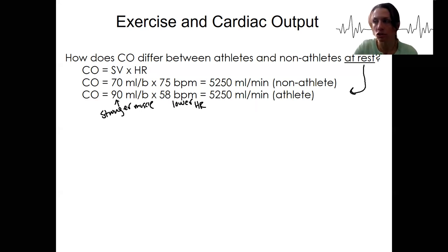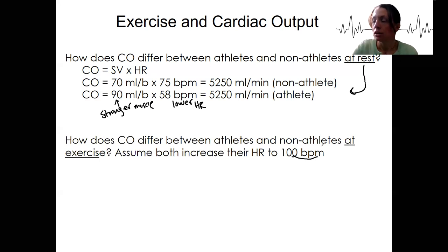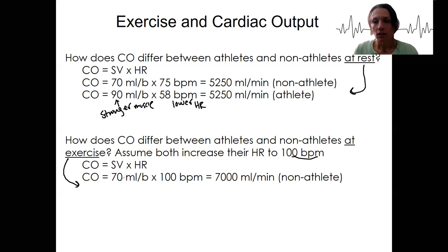So now what happens if these two individuals exercise? How does cardiac output change and how does it differ between them? Let's assume both people increase their heart rate to 100 beats per minute — not super high, not intense exercise. For the non-athlete, using the formula: 70 times 100 equals 7,000 milliliters per minute at exercise. This individual now has more blood traveling to all their muscles and can continue to exercise at this low to moderate intensity.